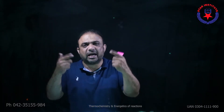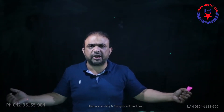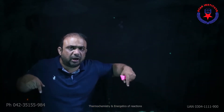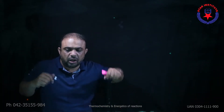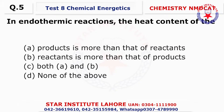Question number four: If an endothermic reaction is allowed to take place in air, the temperature will fall — because it is endothermic, the surroundings lose heat to the system. So the choice is C — decreases. Question number five: In endothermic reactions, the heat content of the products is greater than the heat content of the reactants.